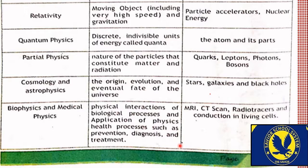Particle physics — nature of the particles that constitute matter and radiation۔ آپ نے سنا ہوگا کہ atom is the smallest particle اور proton، neutron، electron اس کے حصے ہیں، لیکن scientists نے around 2012 میں latest particle discover کیا اور کہا کہ neutron اور proton کے اندر بھی چھوٹے particles ہیں جنہیں quarks، leptons، photons اور bosons کہتے ہیں۔ Particle physics ان particles پر focus کرتی ہے۔